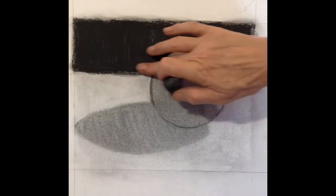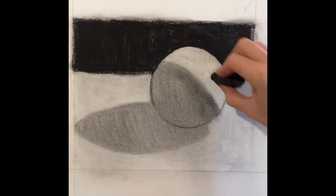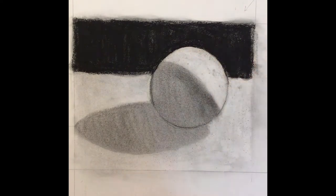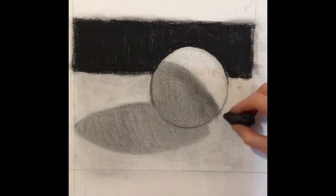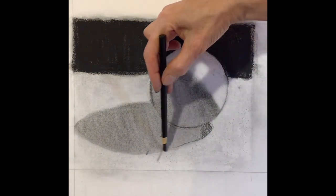So when I rub my compressed charcoal it obviously gets a lot smoother. I'm adding some black into that core shadow along the band in the middle of the sphere just by rubbing it from the dark area.